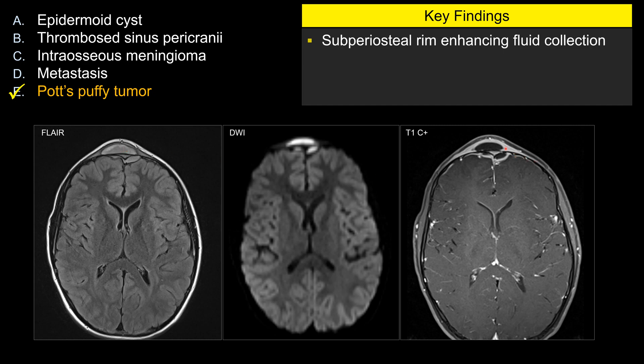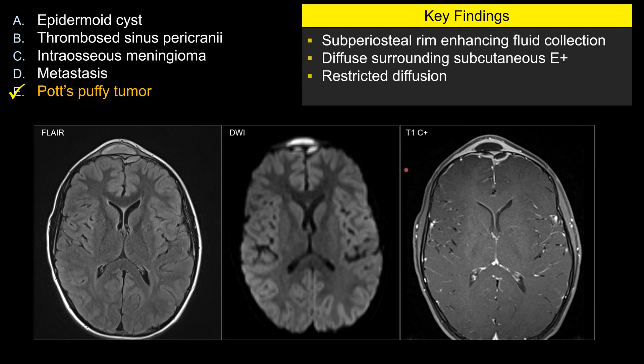On the post-contrast images, there is rim enhancement. There is also diffuse enhancement in the surrounding subcutaneous tissue, showing a diffuse inflammatory process. Additionally, there is intracranial involvement with a rim-enhancing collection. That intracranial collection, as well as the extracranial collection, both show restricted diffusion.